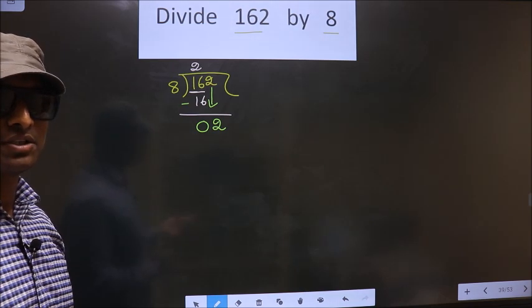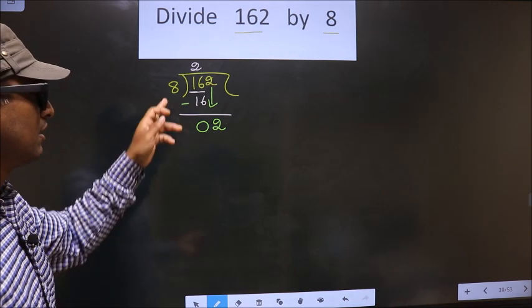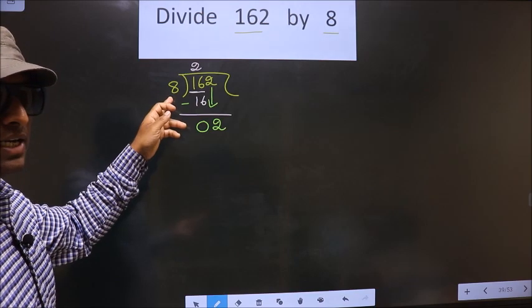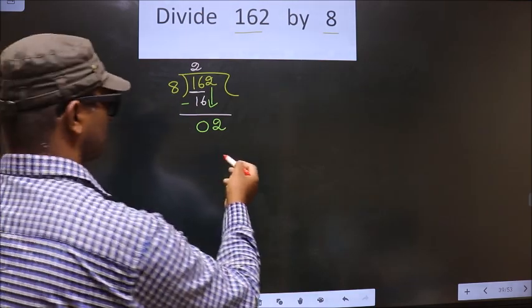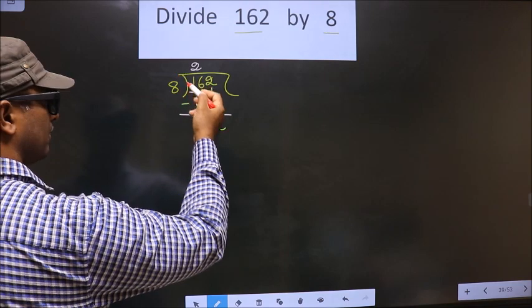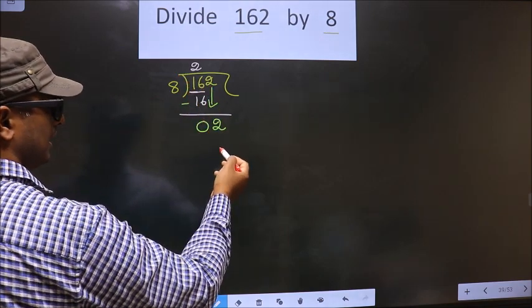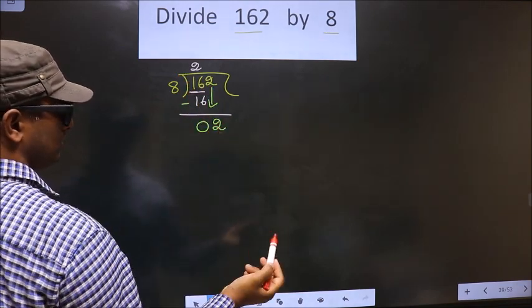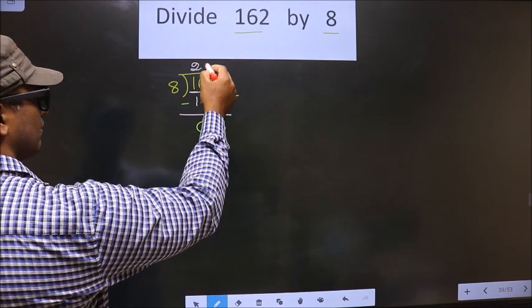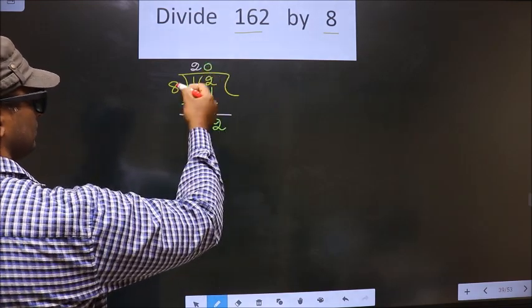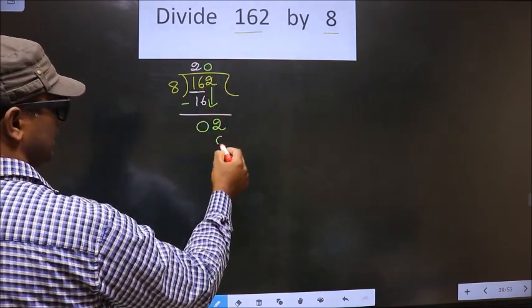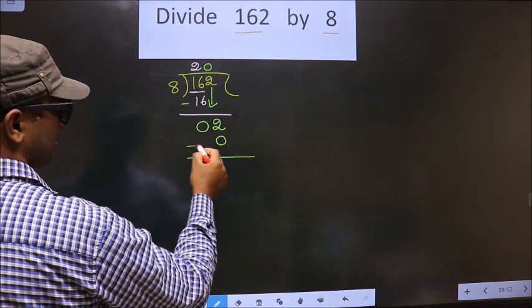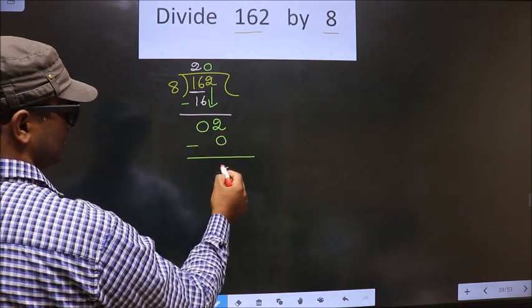Instead, what you should think of is to this number what should we multiply to get a number here. If we multiply by 1, we get 8 here but 8 is larger than 2. So, what we do is we multiply by 0. So, 8 into 0 is 0. Now, you subtract 2 minus 0 you get 2.